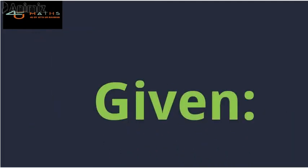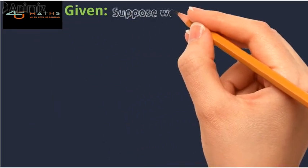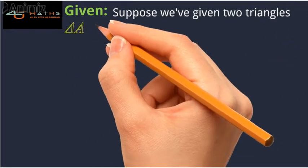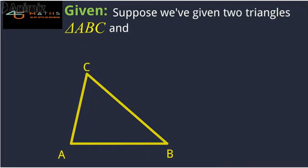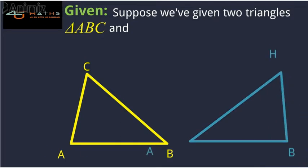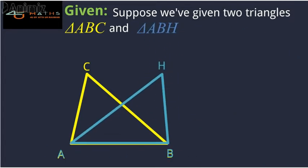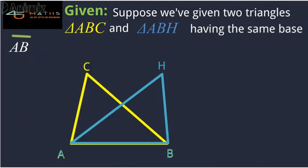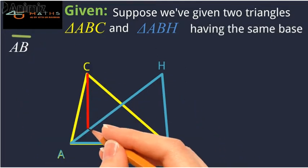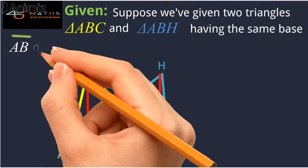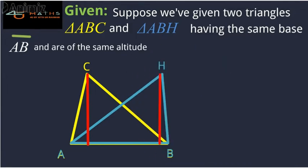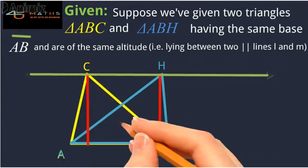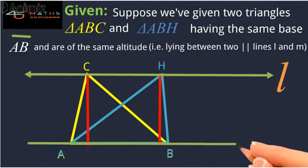Given: Suppose we have two triangles, triangle ABC and triangle ABH, having the same base AB and are of the same altitude. That is, both the triangles are lying between two parallel lines L and M.